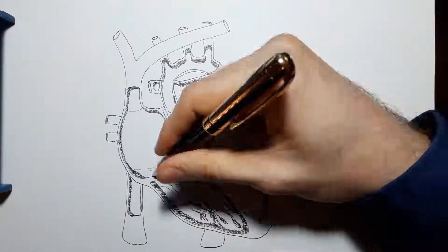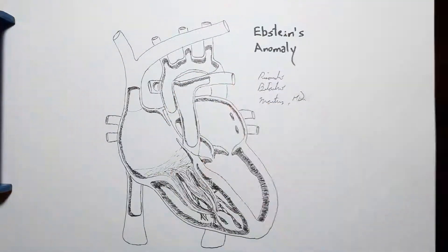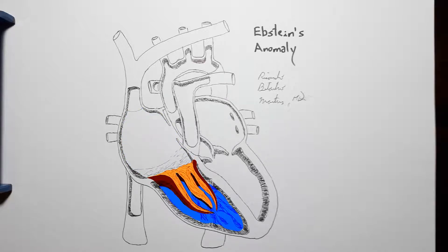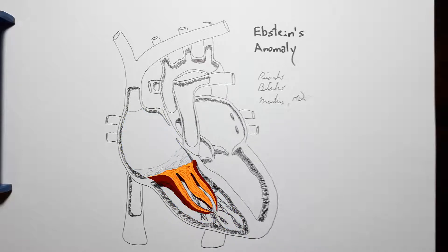The tricuspid valve communicates the right atrium to the right ventricle and is meant to prevent backflow of blood from the right ventricle to the right atrium when the right ventricle contracts. Clearly denoted by the name, the tricuspid valve is made by three leaflets — tricuspid, three leaflets or cuspids.